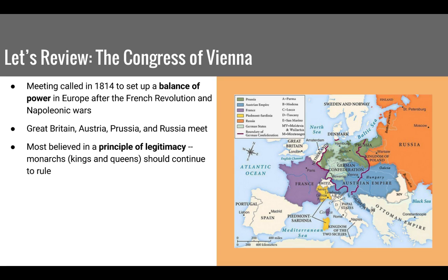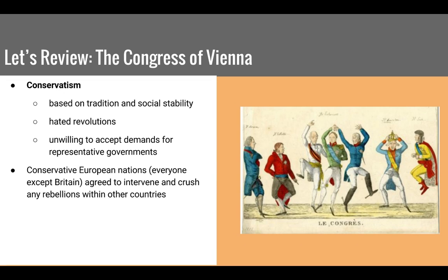Let's start with our review of the Congress of Vienna. At the end of the Napoleonic Wars, European nations such as Prussia, Austria, France, Great Britain, and Russia got together to establish a balance of power in Europe. They checked the power of France, established some independent territories, and divided up other lands. Most of these countries wanted to reestablish the conservative order and bring back the principle of legitimacy — the idea that monarchs should be ruling, not republican or radical governments like France had developed, or a dictatorship like Napoleon's.